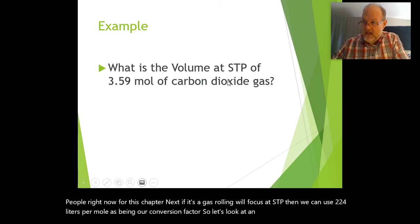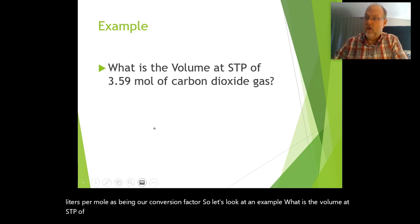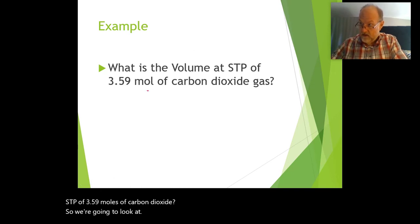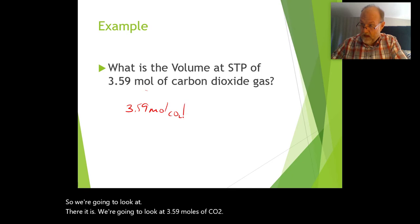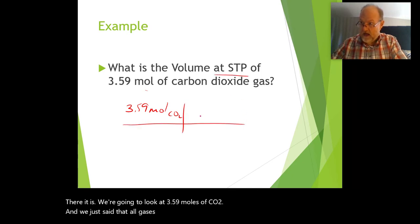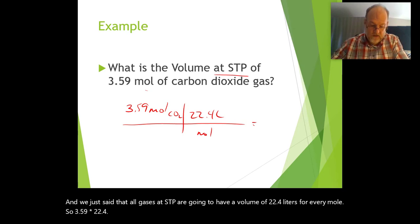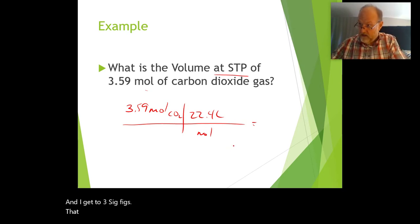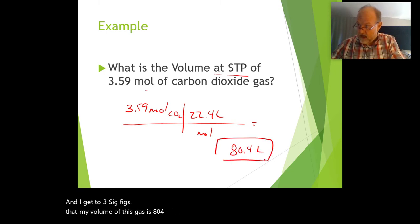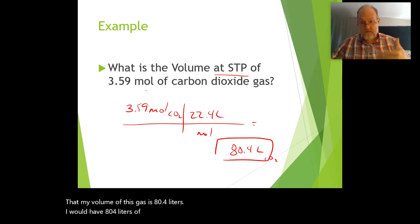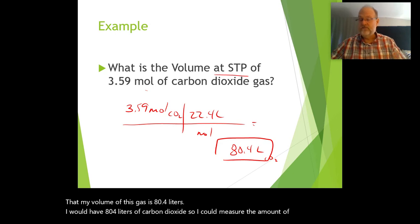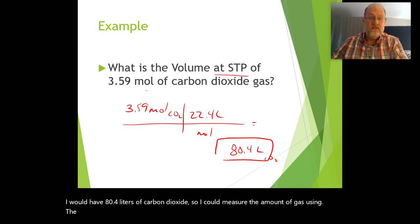Let's use the STP conversion. What is the volume at STP of 3.59 moles of carbon dioxide? We multiply 3.59 moles of CO₂ by 22.4 liters per mole. So 3.59 × 22.4 gives, to 3 significant figures, 80.4 liters of carbon dioxide.